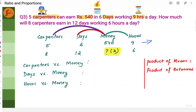For the second proportion: 8 carpenters, 12 days, 6 hours, and money earned is x — we need to find x. Each parameter is compared with money. For carpenters versus money: 5 carpenters earn 540 rupees; if there are 8 carpenters, the total money will be more, so it is directly proportional. We write: 5 is to 8 is equal to 540 is to x.